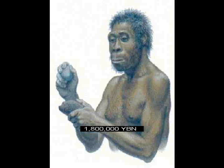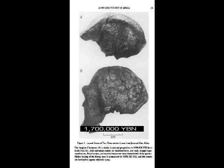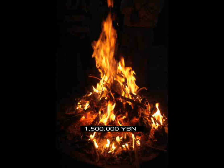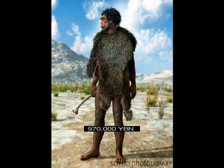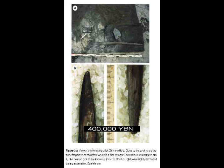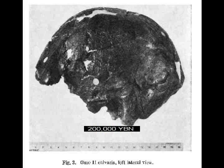Stone tools. Homo erectus. Erectus moves into Eurasia. Controlled use of fire. Erectus evolves less body hair. Hominids wear clothing. Humans — Homo sapiens.